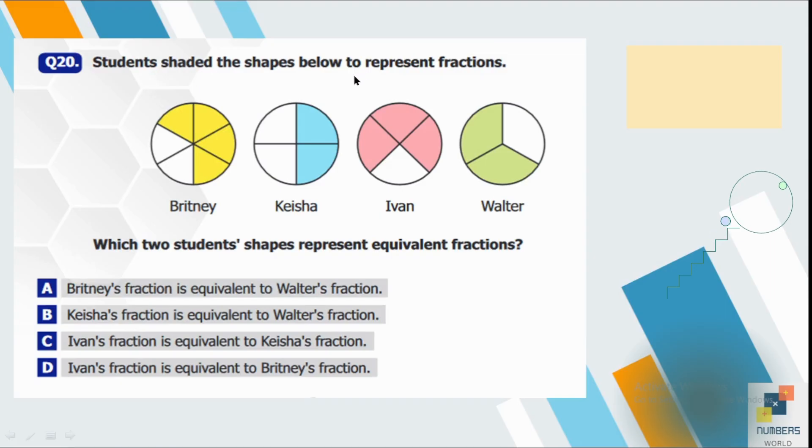Question number 20. Students shaded the shapes below to represent fractions. Brittany, Keisha, Ivan and Walter, which two students' shapes represent equivalent fractions. So you can say Brittany has 4 by 6, Keisha has 2 by 4 and Ivan has 3 by 4 and Walter has 2 by 3. So let's see. The Brittany's part is 4 by 6 and Walter has 2 by 3. If we simplify 4 by 6 on 2, we will get 2 by 3. So it means that Brittany and Walter has equivalent fraction.